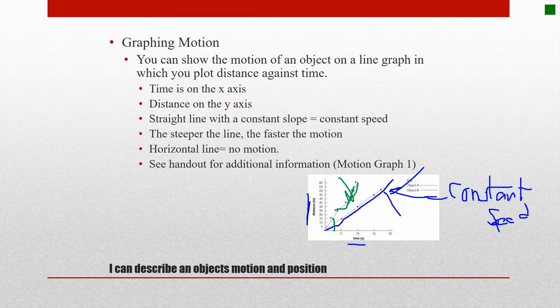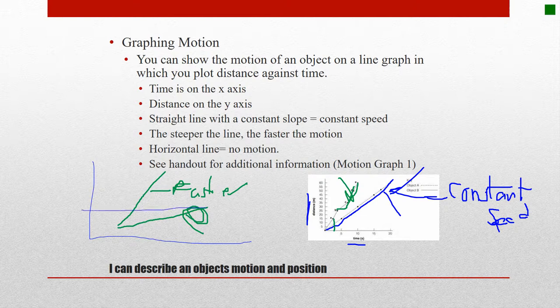Basically what you're going to find is the shallower the angle, the slower the speed. This would be one speed, this would be a different speed, and this is going to be faster. This is slower because you're changing distance—it's taking longer to get the same distance. You're covering the same distance in a lot longer time, so you're going slower.